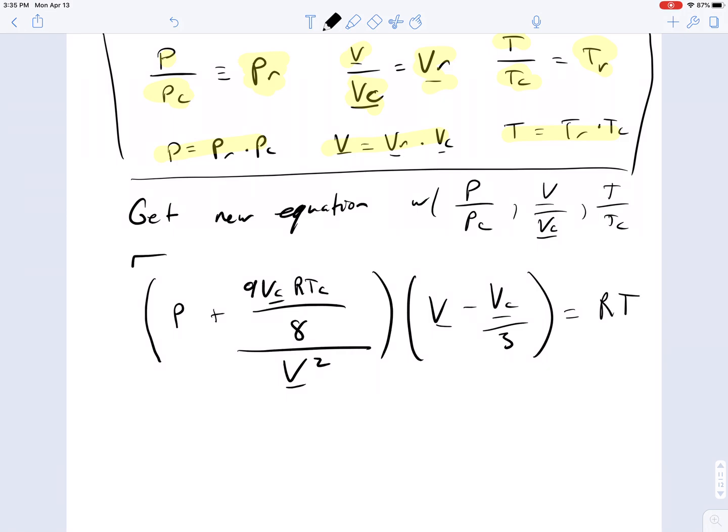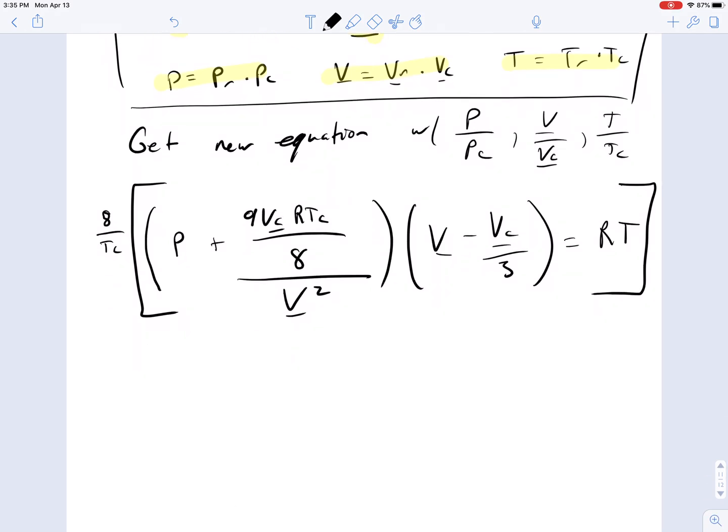Now if we take this entire equation, left and right-hand side, and multiply through by 8 over TC and do a little rearranging, we can start to see how we can simplify this into a new type of equation. So this becomes now 8 times pressure over R times TC plus 9 VC over V underbar R squared times V underbar minus VC underbar over 3, and this is equal to 8 times T over TC. I decided to divide through by R there as well, so the R that was here is now gone, and the R that was here is now gone, and we have an R that is now the denominator of this first term.